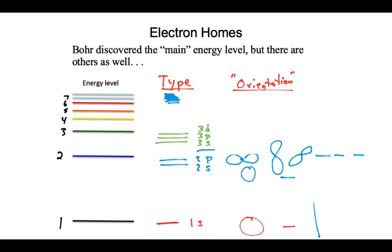Summary of orientations: S gets one orientation, P gets three orientations. As we scale upwards, the three S still gets one orientation (it's a sphere), and three P gets three orientations (it's a dumbbell). For D, we get five orientations. For F, we get seven orientations. Those numbers are going to become important shortly.